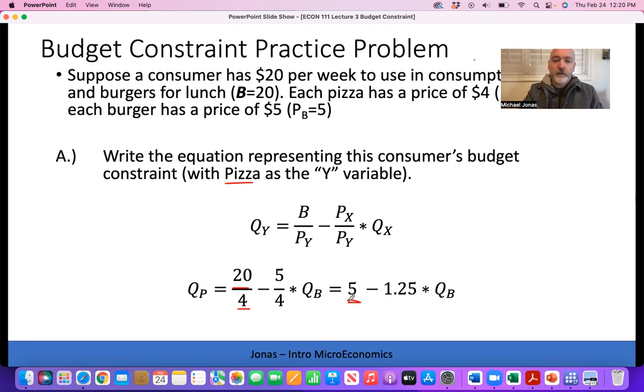Then the ratio of prices, the price of burgers over the price of pizza, 5 over 4, gives us a slope of negative 1.25. So we have quantity of pizza equals 5 minus 1.25 times the quantity of burgers. Now we can plug in the number of burgers you consume and calculate the maximum number of pizzas you consume with the remaining budget.